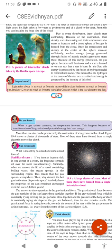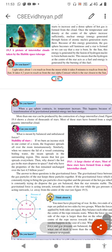Do you know students, light takes about 1 second to reach us from the moon while it takes 8 minutes to reach us from the sun. It takes 4.2 years to reach us from the star Alpha Centauri, which is the star closest to the sun.